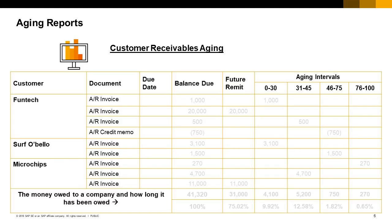The Customer Receivables Aging Report shows all open transactions — unreconciled — of customers, typically AR invoices, and how long they are overdue. This is a key report for monitoring customers' debt as well as evaluating the credit quality of customers. You can find the Aging Reports in the Financials module. From the Financial Reports menu, choose Accounting and then Aging. The report can be expanded to show each transaction or collapsed to show aggregated amounts per customer.